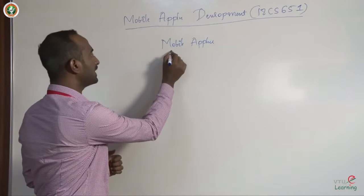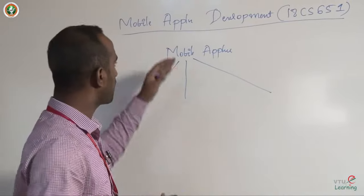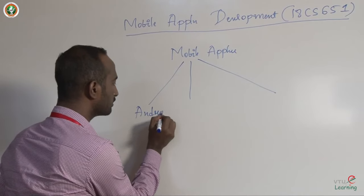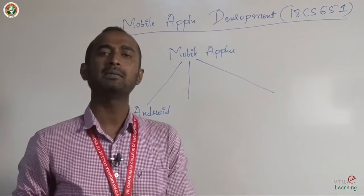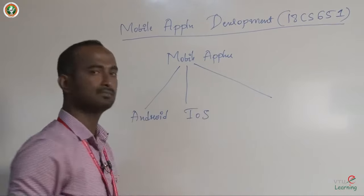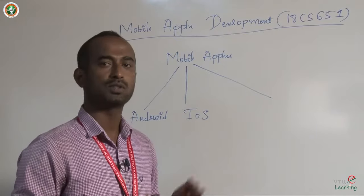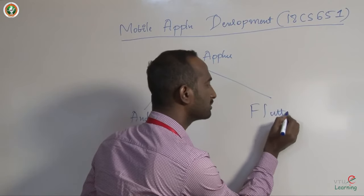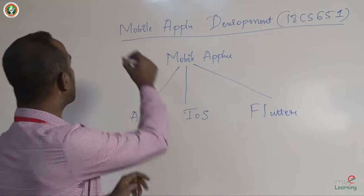Mobile application development can be categorized into three categories. One is based on Android — a Linux-based, open-source operating system. Another is based on iOS, which is commonly used only in Apple devices. The third is Flutter. These are the three platforms available for developing mobile applications.